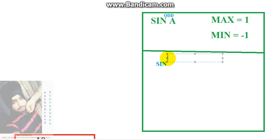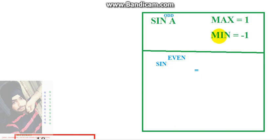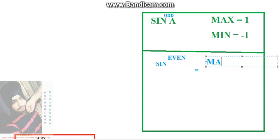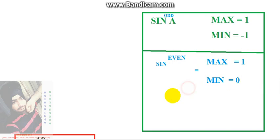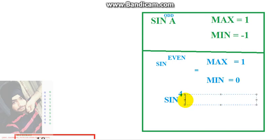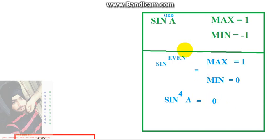For sin raised to an even power, minus 1 raised to an even power becomes positive. So in the even case, the maximum value is still 1, but the minimum value becomes 0 — because sin(0) is 0. For example, sin^4(a) cannot be minus 1; its minimum is 0.